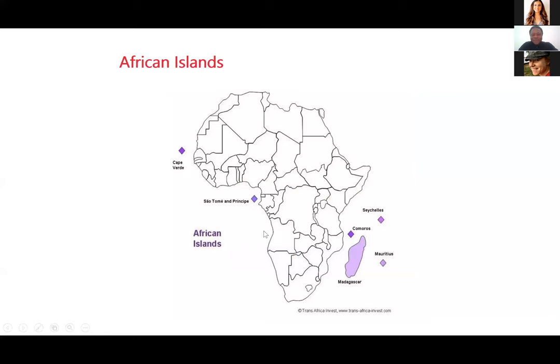There are six main islands. Of course the biggest in geographic terms is Madagascar. When you draw Africa in geography class, if you leave out Madagascar, that is a mistake. Madagascar is actually bigger than some countries. You also have Mauritius, Comoros, Seychelles, São Tomé and Príncipe, and Cape Verde — these are the islands you should keep in mind.